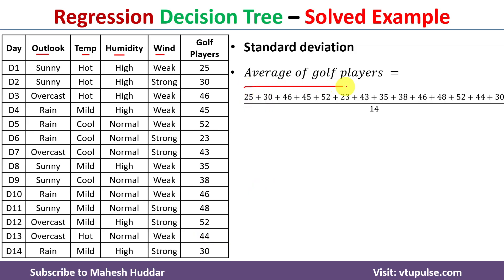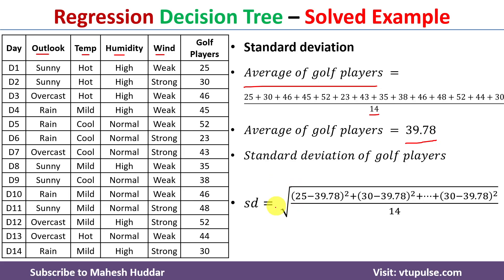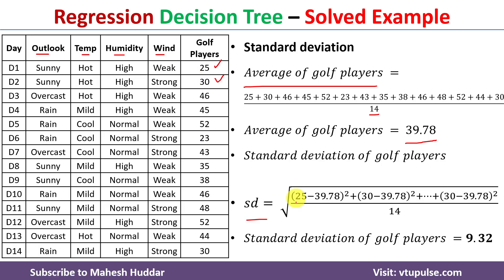First we will calculate the standard deviation for the whole dataset. To calculate the standard deviation, we first need to calculate the average. The average is the sum of all values divided by the total number of examples, which is 14, giving us 39.78. The standard deviation is the square root of the sum of squared differences from the mean — for example, 25 minus 39.78 squared, 30 minus 39.78 squared, and so on, all divided by 14. The standard deviation for the whole dataset equals 9.32.